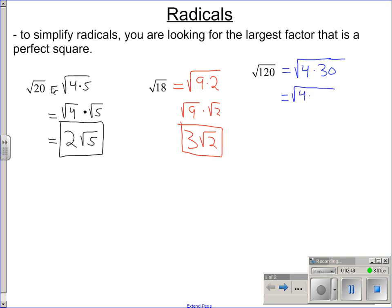Factors of 30 that are perfect squares. Well, factors of 30 are just 1 times 30, 2 times 15, 3 times 10, 5 times 6. None of those are perfect squares. So, it stays. There's lots of factors, but none of them are perfect squares. So it's not going to help us to do any of that. So, square root of 4 times square root of 30, 2 square root of 30.